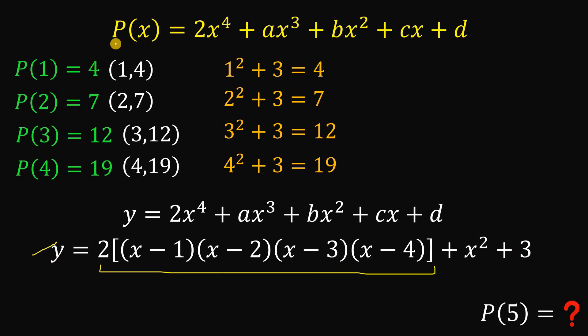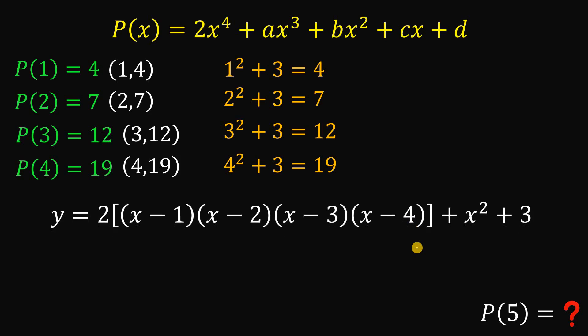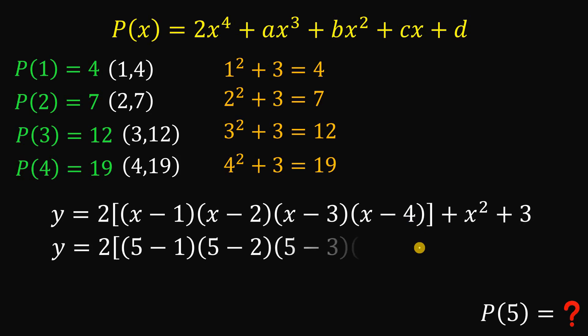This is now our P of x. This y simply our P of x. And to get the value of P of 5, let's replace all of this x with 5. Like this. And this is the value of P of 5. Now let's simplify this.